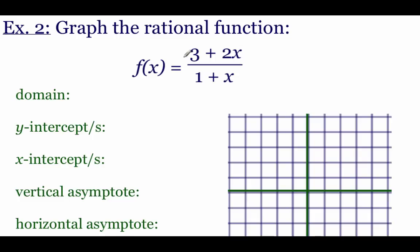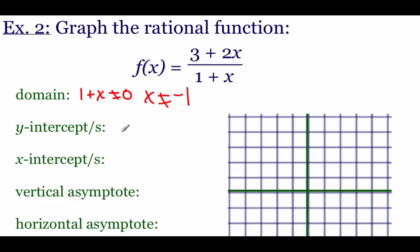For our next example: f(x) equals three plus two x over one plus x. Just like before, we start by finding the domain — the bottom can't equal zero, so x can't be negative one. For the y-intercept, plug in zero: two times zero is zero, three plus zero is three on top, and we've got one on the bottom. Three divided by one is three, giving us the ordered pair (0, 3). Plot that — go up three spaces.